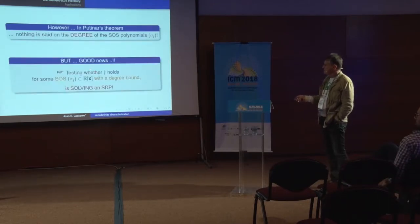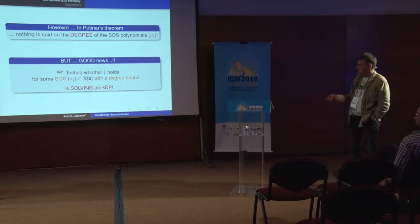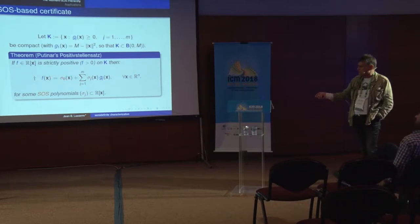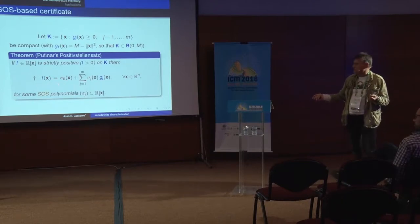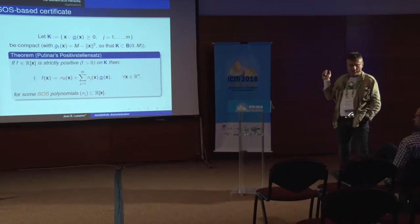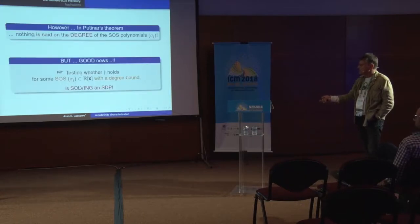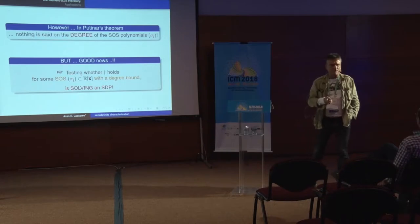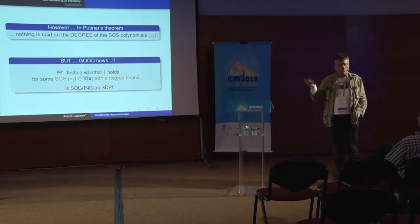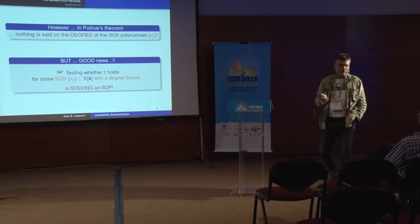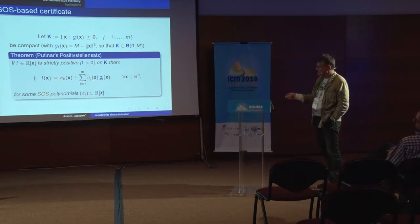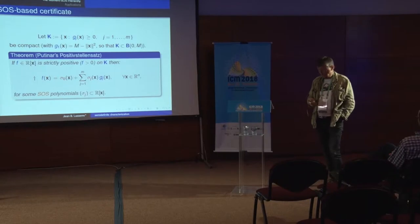Good news: if you want to test whether a polynomial F is positive, you can try imposing a degree bound on the weights sigma_J. You say: I want to write F in this Putinar form with maximum degree on the weights sigma_J — say degree less than 10. Once you do that, testing whether this is true is just solving an SDP (semidefinite program), a subclass of convex optimization problems that can be solved efficiently. That's why this certificate is interesting: checking whether F satisfies the representation with a degree bound is just solving an SDP.